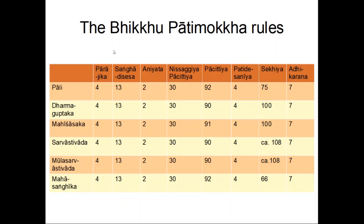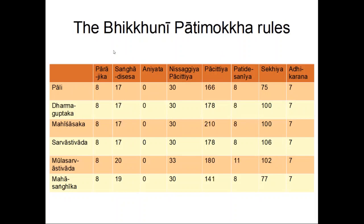Now we look at the Bhikkhuni Patimokkha — the same table with the same schools and classes of offenses, but with Bhikkhuni numbers. All schools have eight Parajikas for Bhikkhunis, which is good news. Since breaking a Parajika requires immediate disrobing, it's really important these rules are properly preserved — and they are fairly well preserved, with the content mostly agreeing across schools with only minor variances. Overall we can be fairly confident about the Bhikkhuni Parajikas.